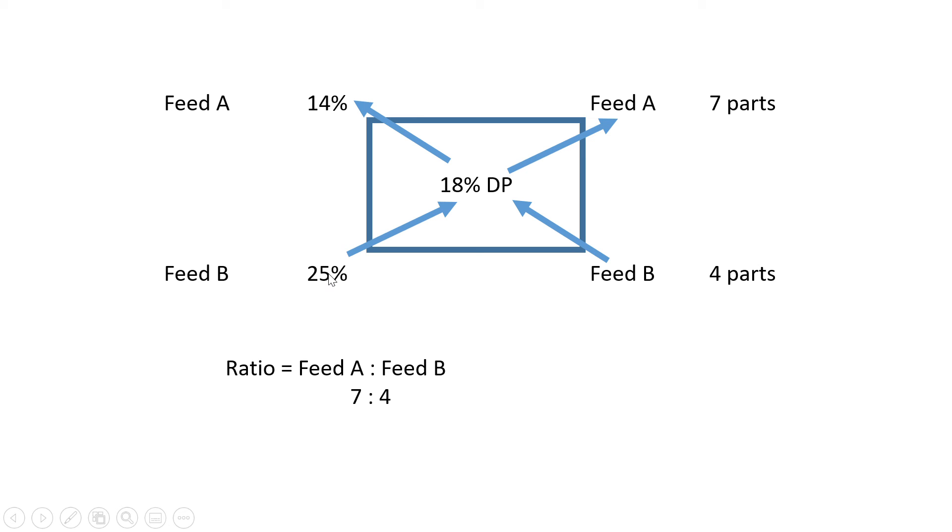So 25 minus 18 gives you seven parts—this is the answer for Feed A, but we used the value from Feed B to get this. That's why the arrow goes up that way. 25 minus 18 gives you seven parts for Feed A.